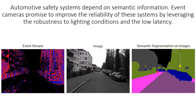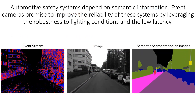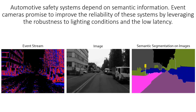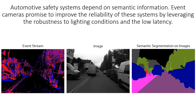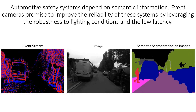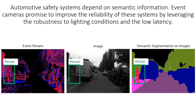Automotive safety systems depend heavily on the semantic information extracted from standard cameras to safely drive in scenarios with other cars and pedestrians. Event cameras have the potential to significantly improve the robustness of these systems, since they provide low latency measurements which are robust to extreme lighting conditions.